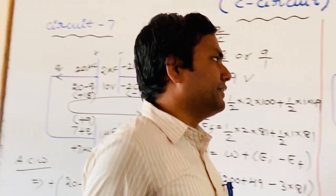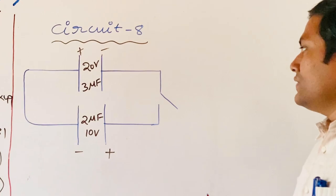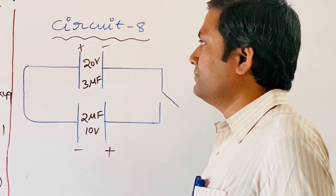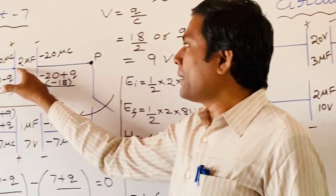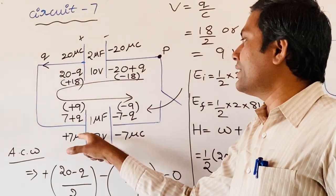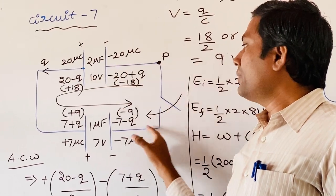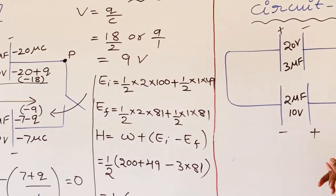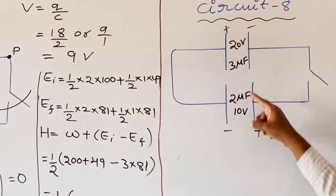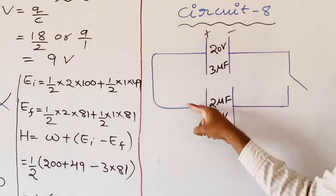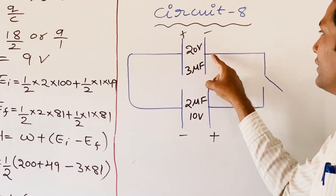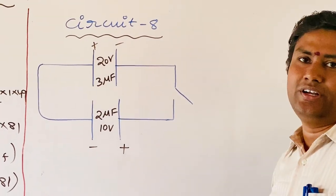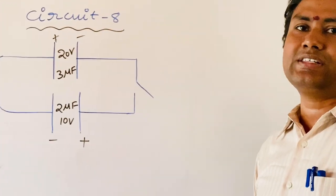Now come to circuit number 8. This circuit is a little bit different. In the previous circuit, the positive plate of the capacitor was connected to the positive plate, and the negative plate was connected to the negative plate. In this circuit, the positive plate is connected to the negative plate and the negative plate is connected to the positive plate — that is, the polarity is not the same.